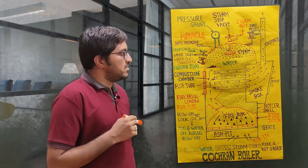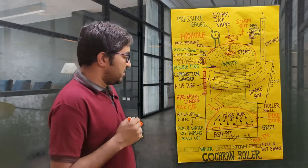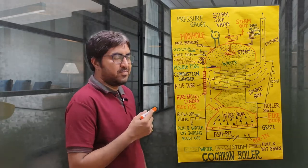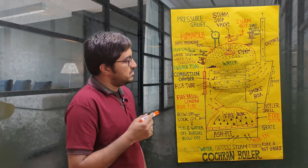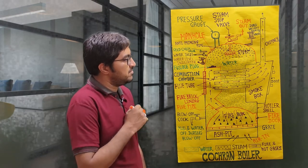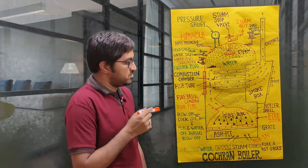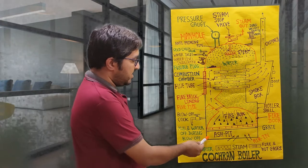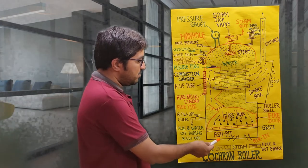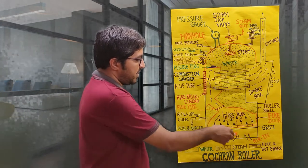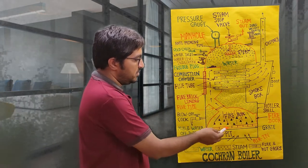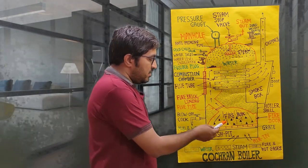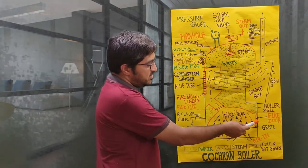First I would like to introduce the different parts, and then we will discuss the working principle of the Cochran boiler. At the bottom side of the firebox — this is the firebox — the combustion takes place. One side of the firebox is connected with the fire door.